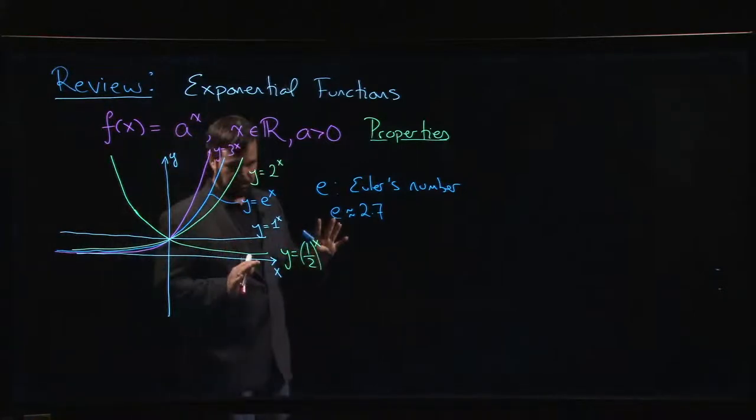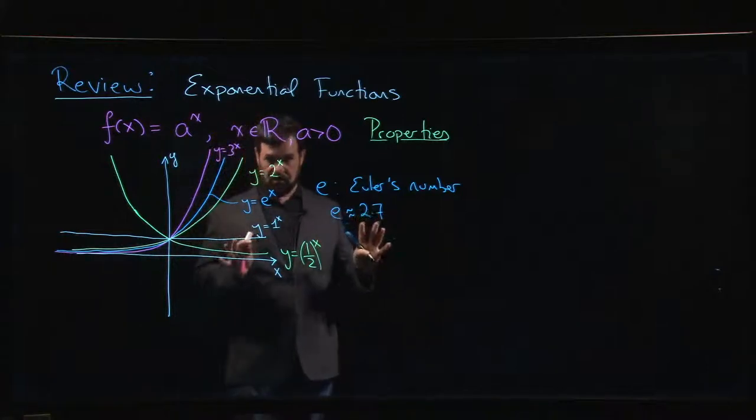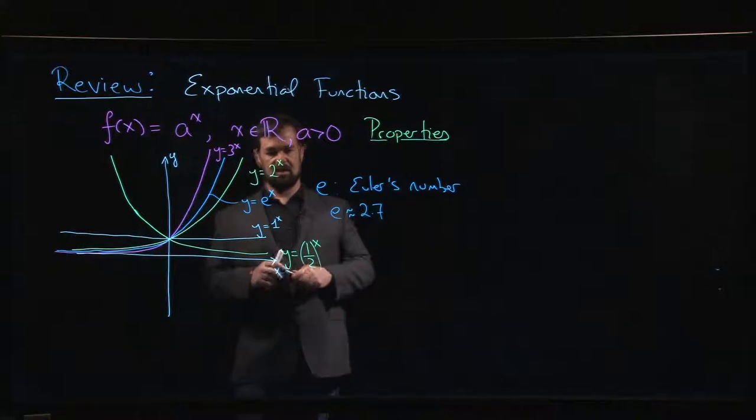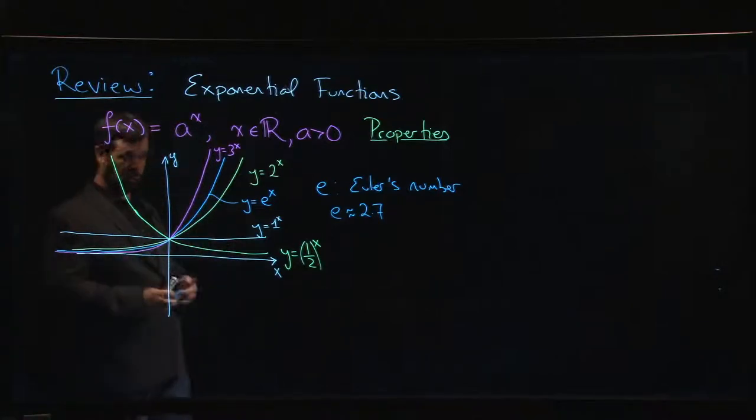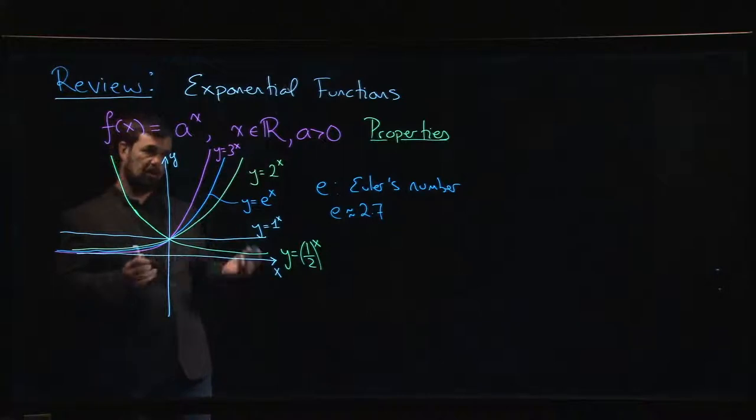It turns out that for a lot of reasons, the natural exponential, especially from the point of view of calculus, is the best exponential function to work with. E is the simplest base. Derivatives and integrals working with base e are much simpler than using base 2 or base 10 or other log bases you might have worked with in high school.